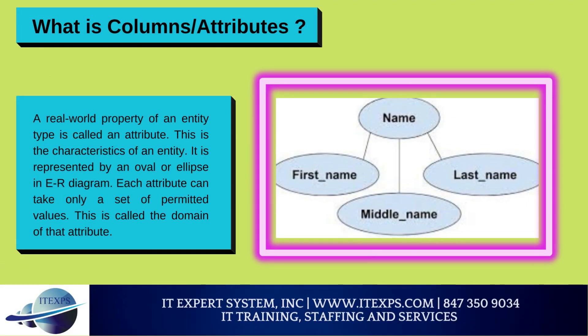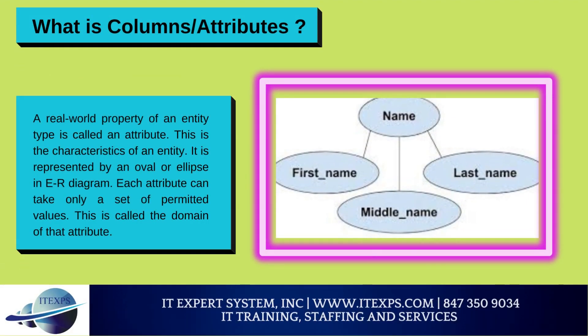What is Columns/Attributes? A real-world property of an entity type is called an attribute. This is the characteristic of an entity. It is represented by an oval or ellipse in an ER diagram. Each attribute can take only a set of permitted values, called the domain of that attribute. For example, we define the role number of the student by a numeric value, so the permitted values are only integers, and hence integer is the domain of attribute role number.